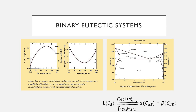C_αE and C_βE are the respective compositions of the alpha and beta phases at T_E — this is the binary eutectic system. In this chapter we have covered definitions and basic concepts of phase diagrams, construction of phase diagrams, types of phase diagrams, determination of phases, interpretation of phase diagrams, and binary phase diagrams.